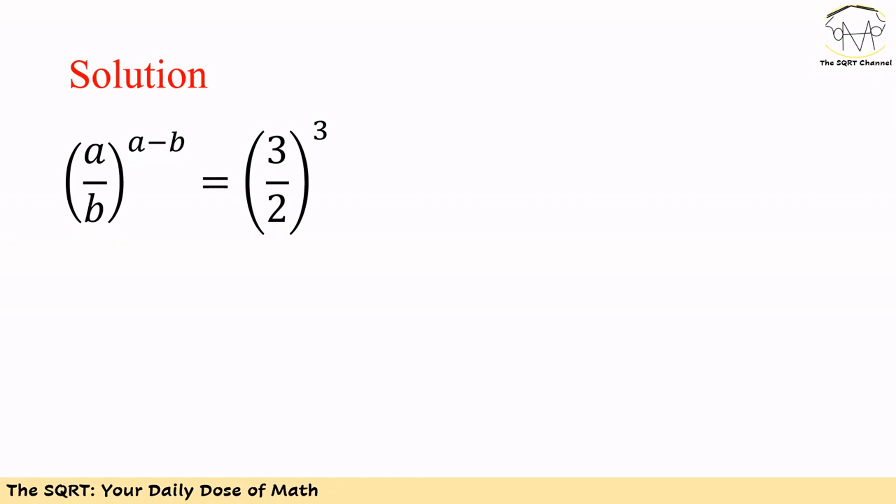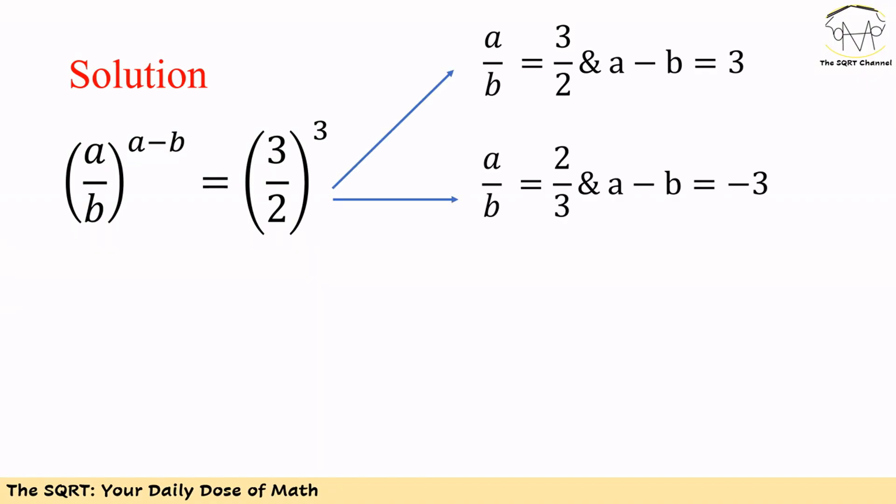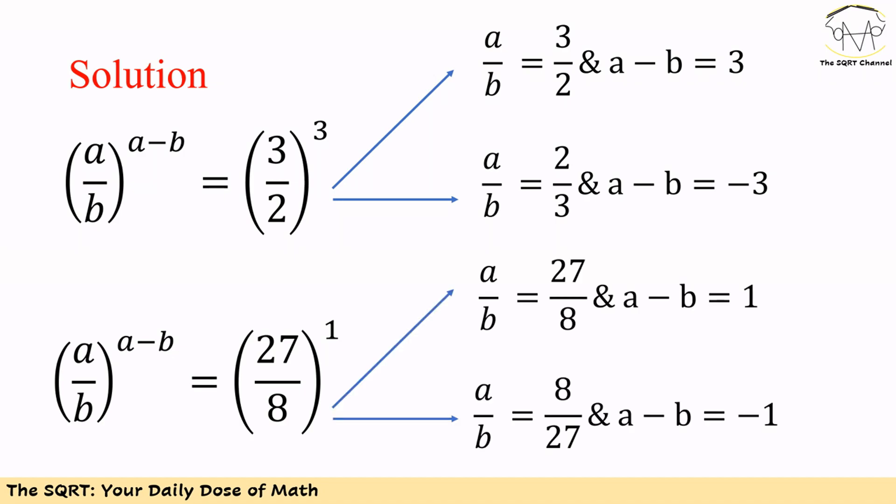So there are two cases. In the first case, (a/b)^(a−b) = (3/2)³: either a−b = 3 and a/b = 3/2, or a−b = −3 and a/b = 2/3. The second case is (a/b)^(a−b) = 27/8: either a−b = 1 and a/b = 27/8, or a−b = −1 and a/b = 8/27.